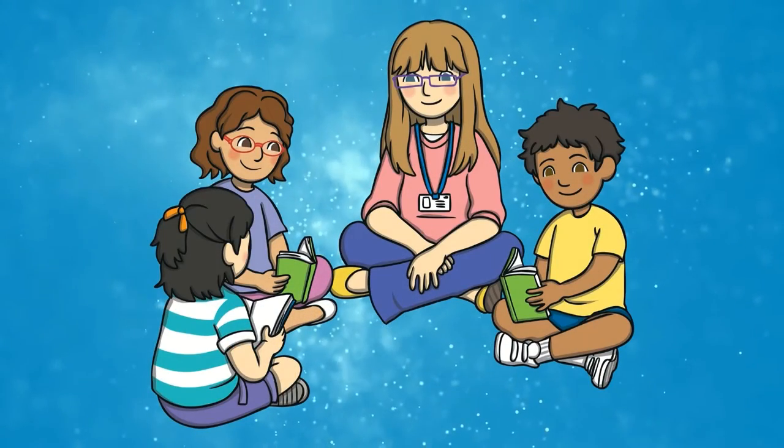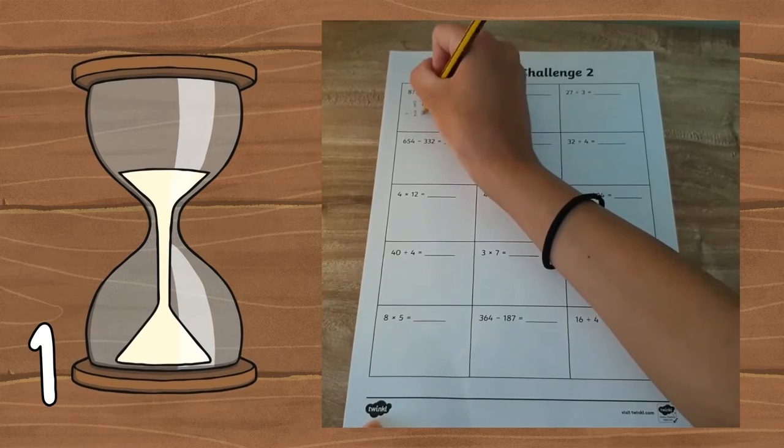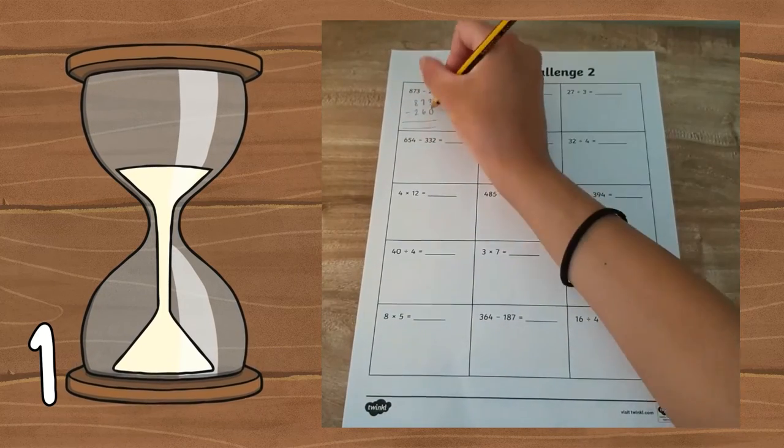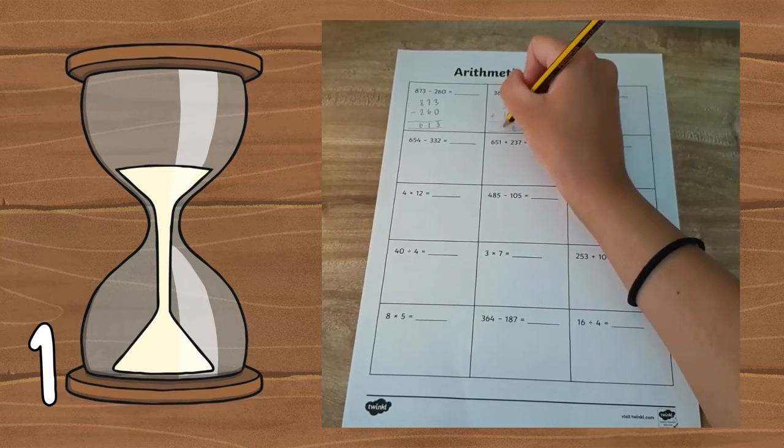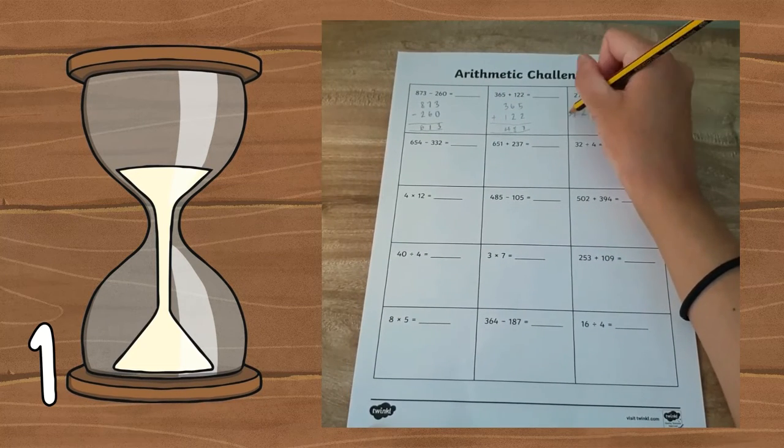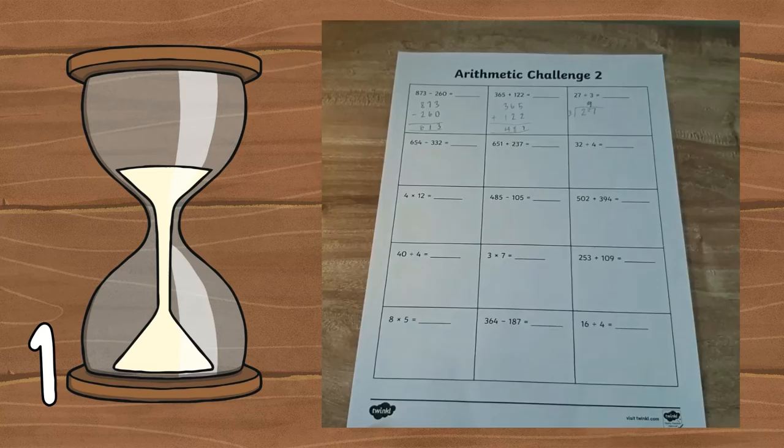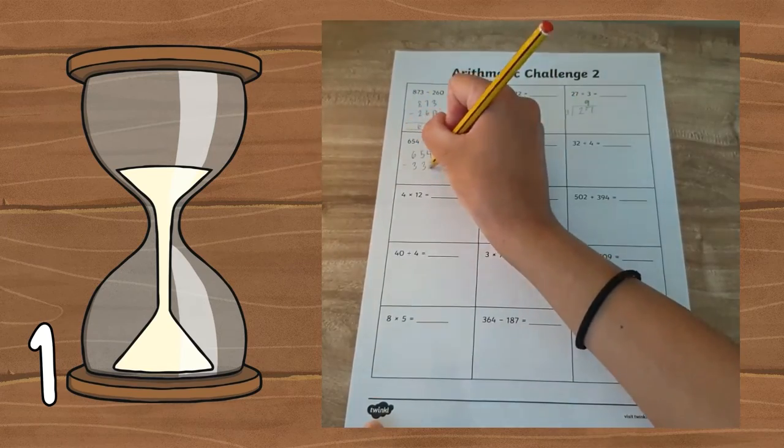Here are a few more ways and ideas you could use this resource. Number one, why not make this a time challenge? You could give your children an amount of time to complete the 15 questions or you could even get children to time themselves. This may be a challenging task but it will get children racing against the clock.